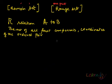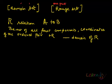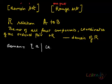So essentially, domain of R equals the set of all A's such that the ordered pair (A, B) belongs to R. Let me write it in set notation: all A's such that (A, B) belongs to R.